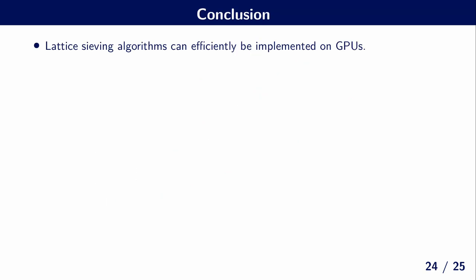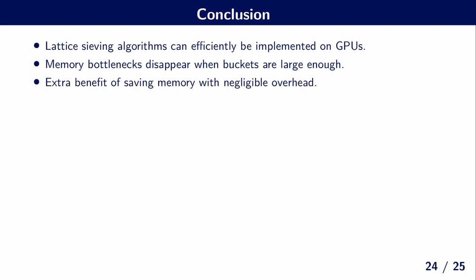So to conclude, lattice sieving can efficiently be implemented on GPUs, including all these more advanced techniques. And the memory bottlenecks disappear when the buckets are large enough. And this has the extra benefit of saving lots of memory with negligible overhead. However, it's important to note that BGL beats BGJ1 in practice on CPUs, but the crossover for GPUs lies much and much higher.